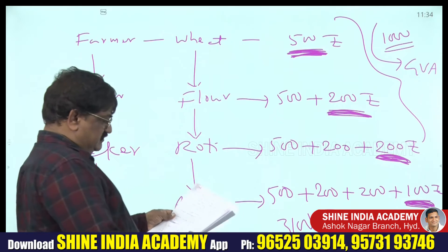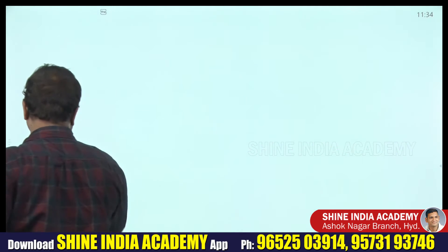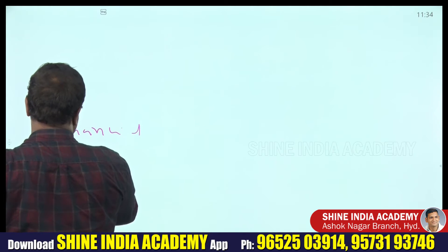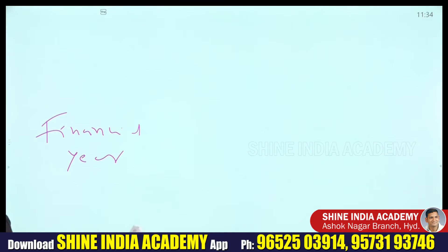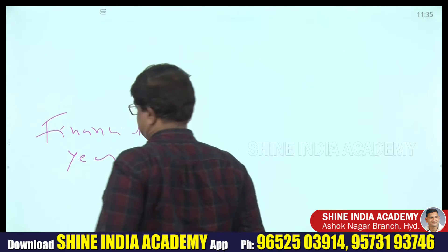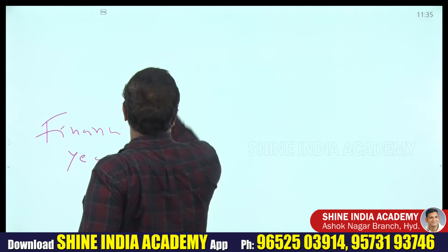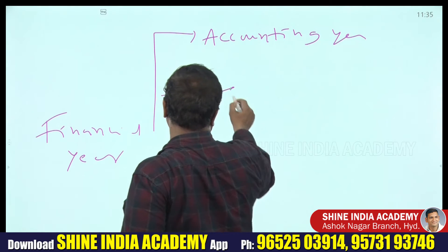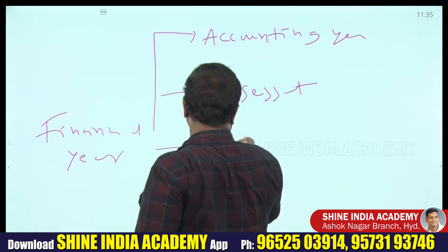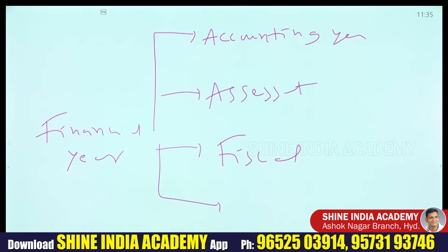In the definition, we found two keywords: 'final value' and 'financial year.' Regarding financial year: the calculation of national income is done in the financial year, which runs from April 1st to March 31st. The National Statistical Office works under the Ministry of Statistics and Programme Implementation.